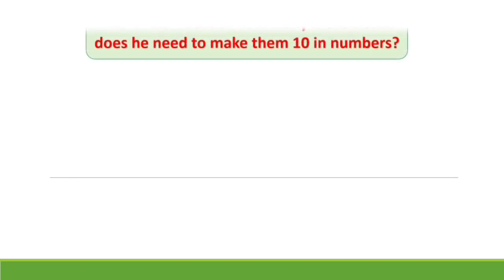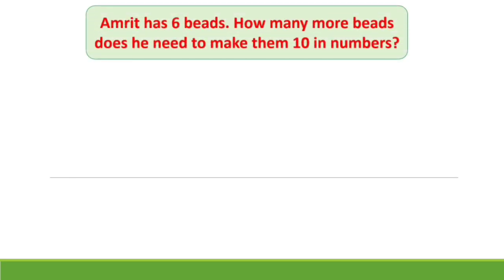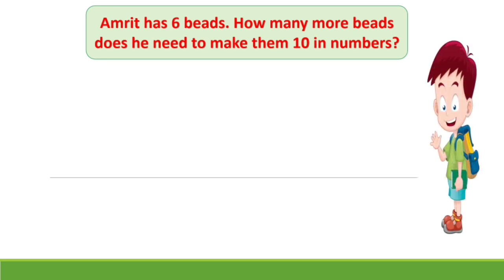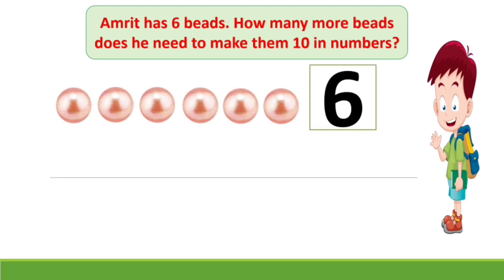Amrit has 6 birds. How many more birds does he need to make them 10 in number? Look kids, Amrit has 6 birds. Let's count them. 1, 2, 3, 4, 5 and 6. So we see that he has 6 birds.